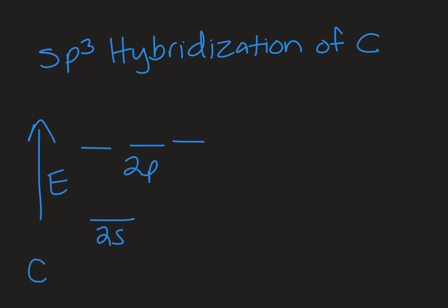Remember that carbon has two electrons in the 2s orbital and then two electrons in the 2p orbitals. Those are both singly occupied.